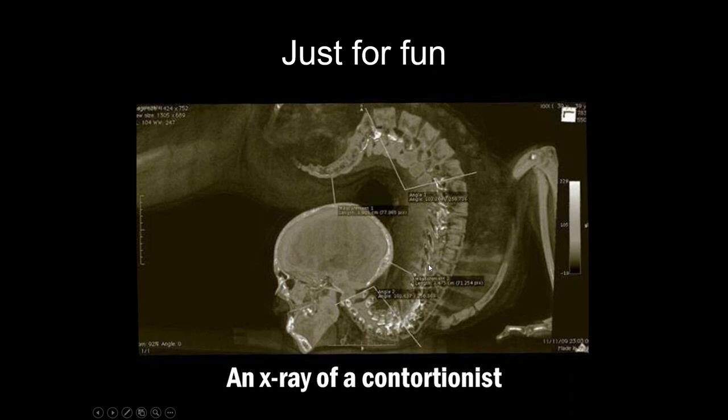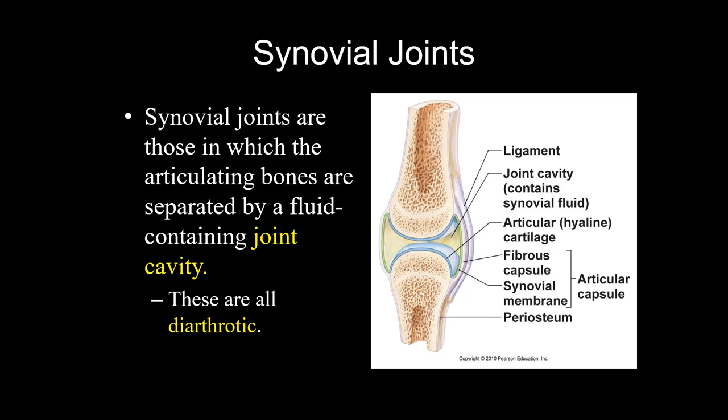Next up is the anatomy of a synovial joint — the third type of structural classification. You get two bones coming together with a fluid-filled space separating them. We have hyaline cartilage (articular cartilage) at the ends of both bones to prevent bone rubbing against bone. We have the synovial membrane which secretes synovial fluid, and then a fibrous capsule with ligaments that help reinforce that membrane to keep everything stable.